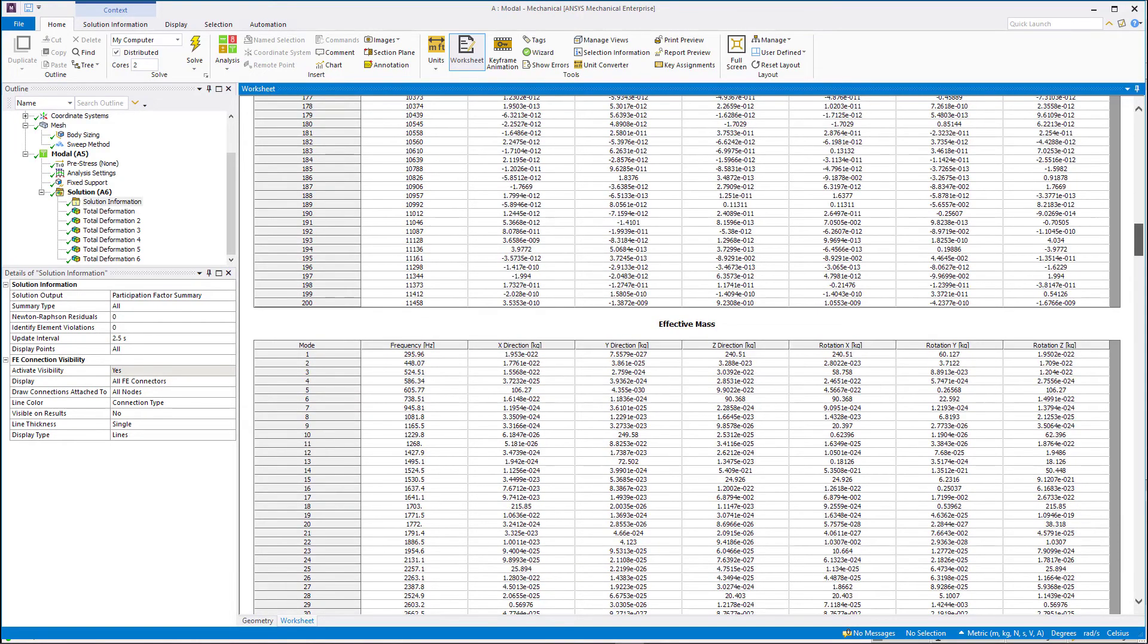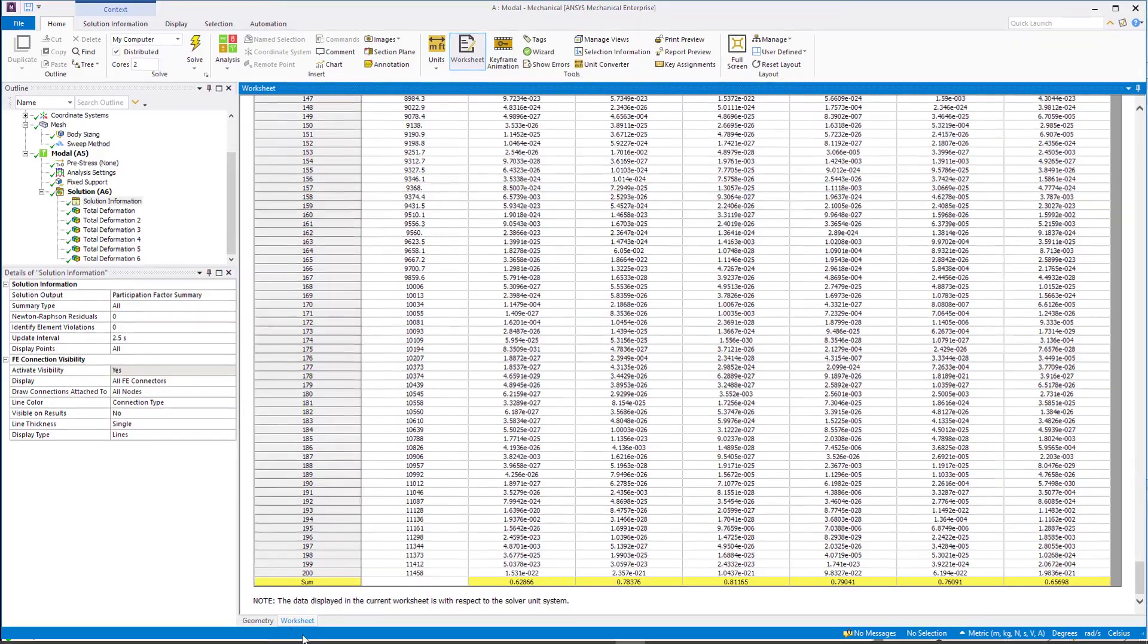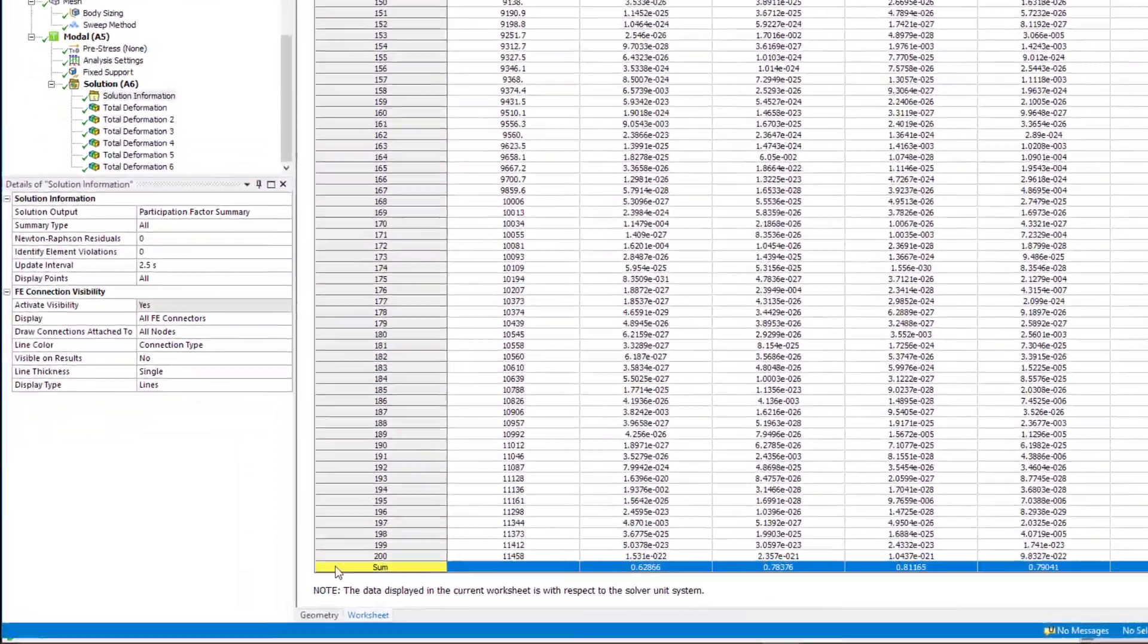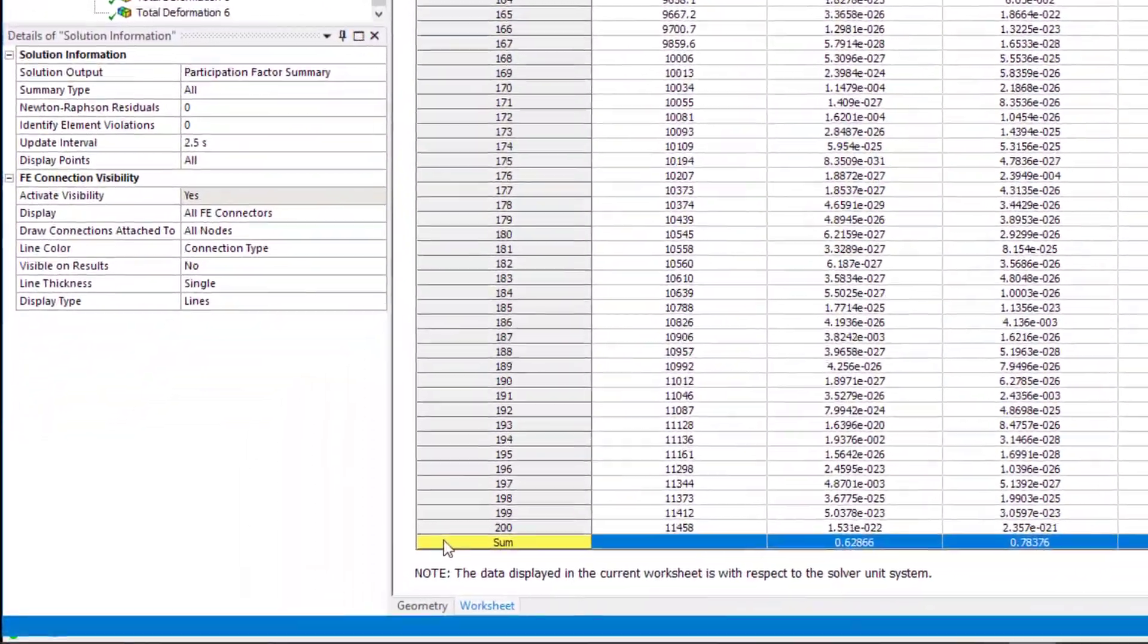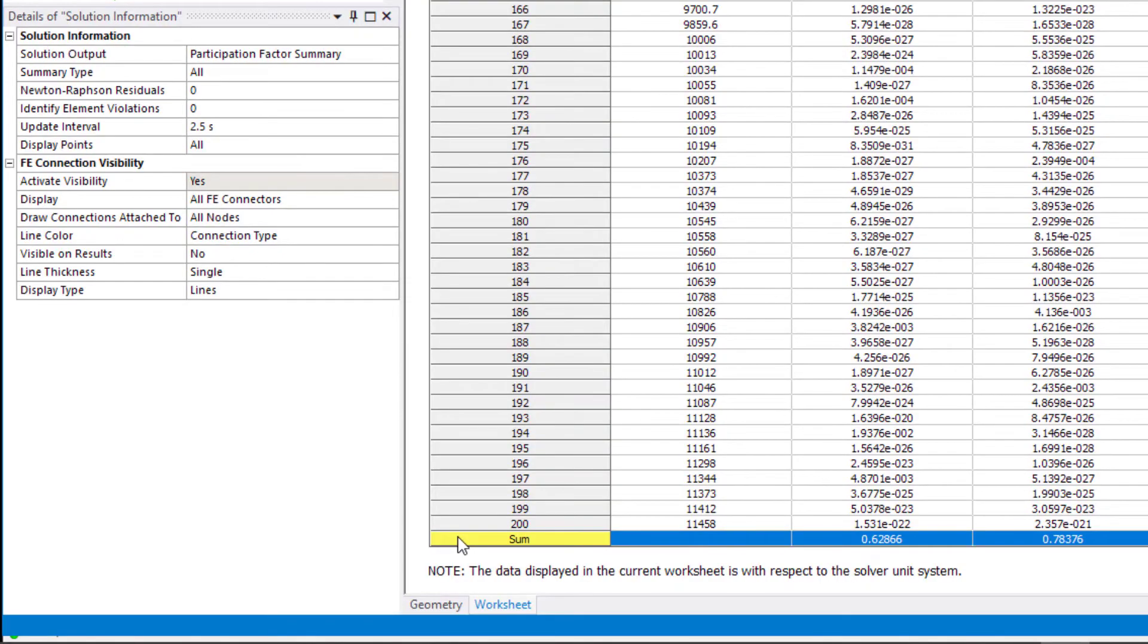As we can see, about 63% of overall mass is moving in the x direction, comparing to the previous case where only 13% of the mass was moving in x direction.